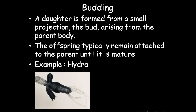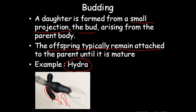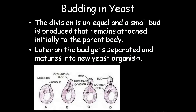Budding: a daughter individual is formed from a small projection from the parent body, which comes out as a bud and forms an individual offspring. The offspring typically remains attached to the parent until it is mature, after which it detaches and develops into a separate individual. This is mostly found in Hydra. In yeast, the division is unequal — a small bud is produced that remains attached to the parent. Later the bud gets separated and matures into a new yeast organism.